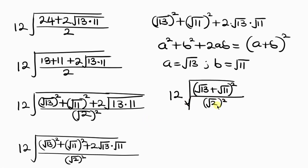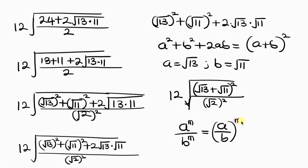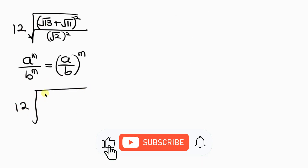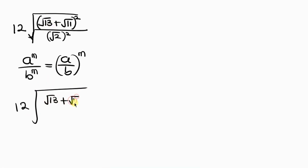Our next step is to apply the law of indices, which says a to the m divided by b to the m can be written as a over b, raised to the common exponent m. Applying this to what we have inside the square root, we get 12 times the square root of: the square root of 13 plus the square root of 11, divided by the square root of 2, all raised to the power 2. Now we have a perfect square inside the square root, so the square root and the square cancel out.